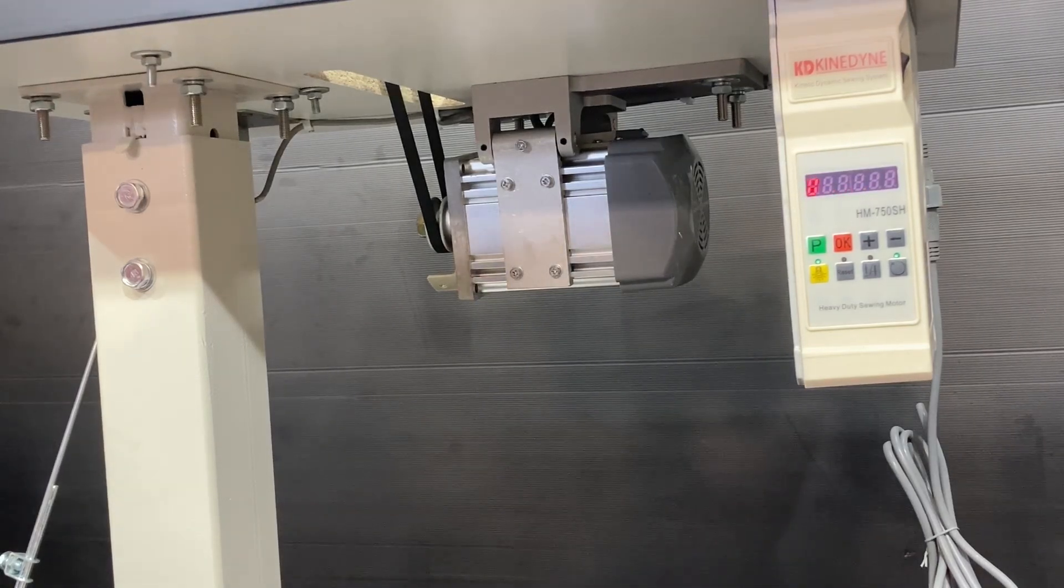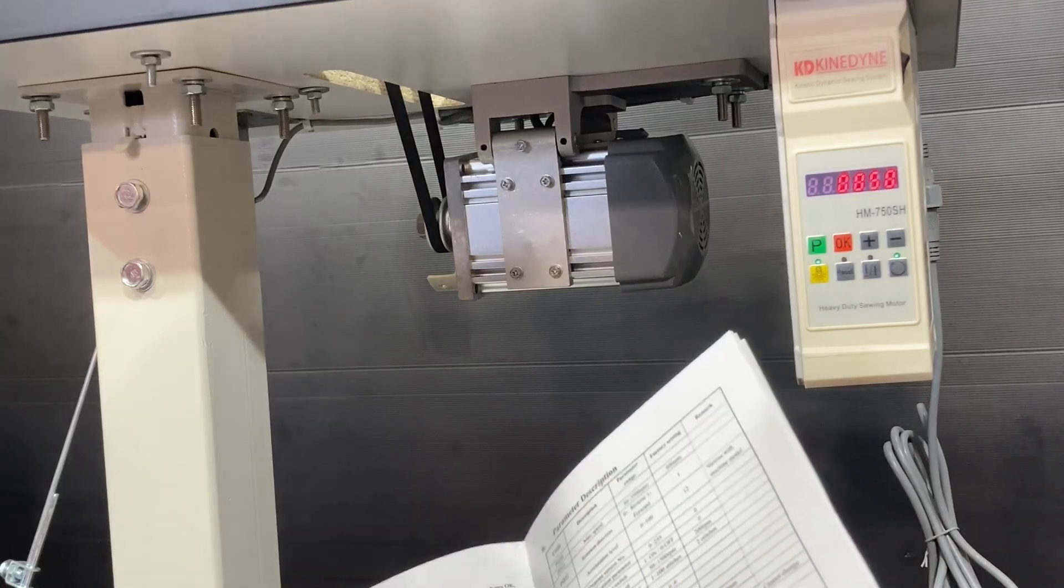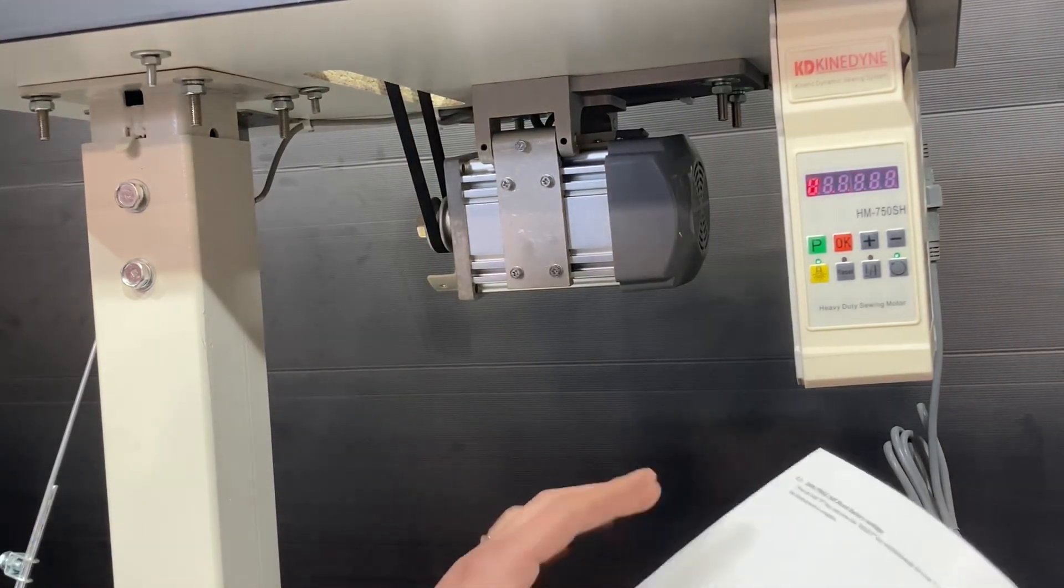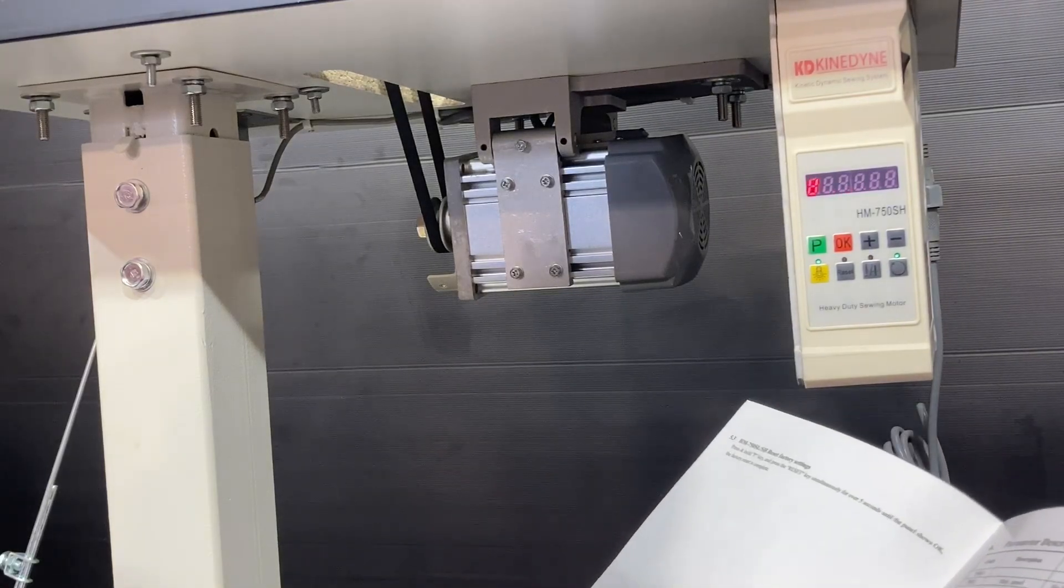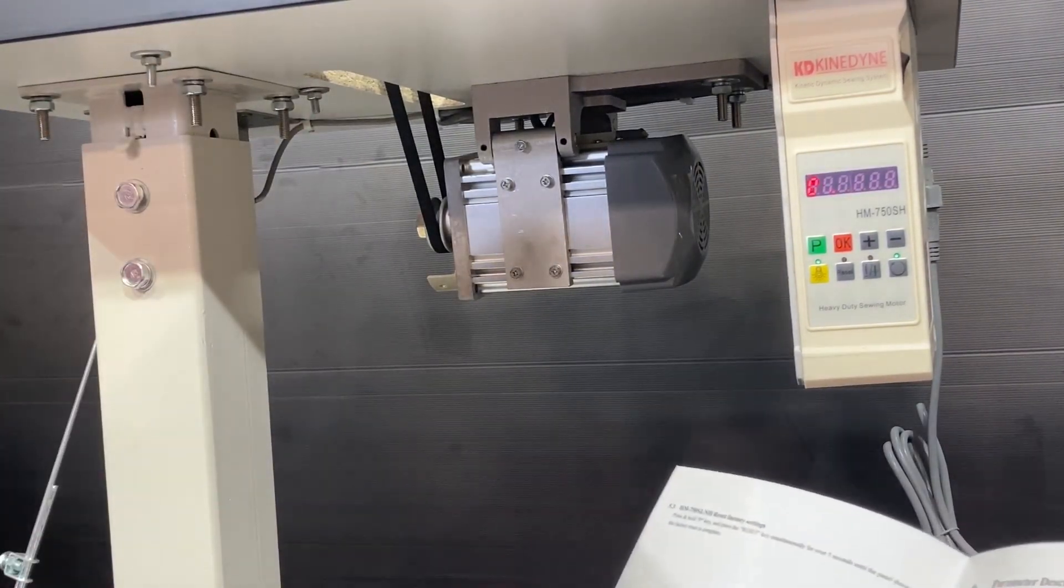When you do go to sew, it will bring up a number there telling you what RPM the motor is running at. So something else that you may need to change.